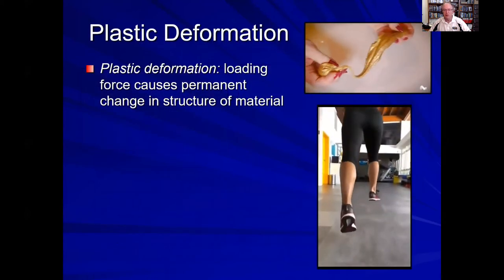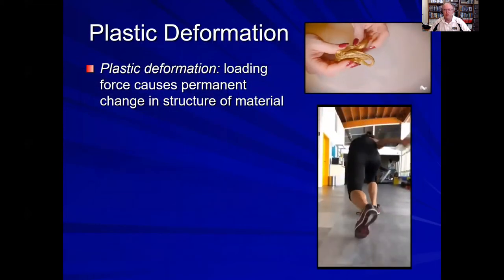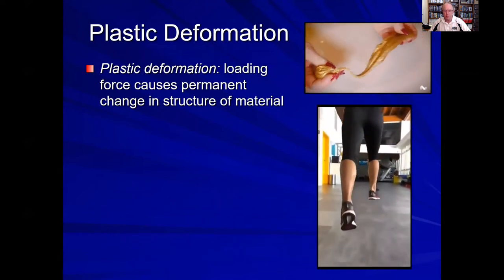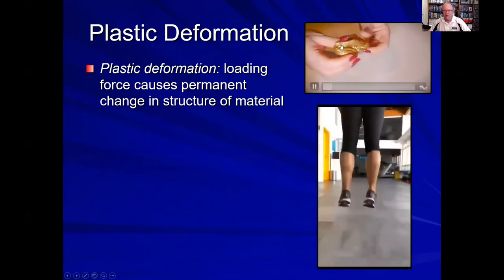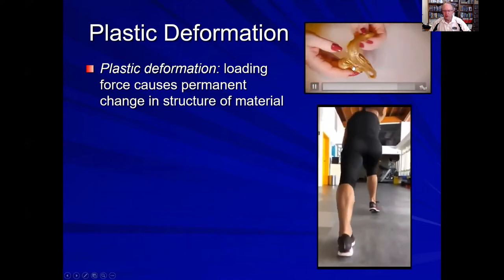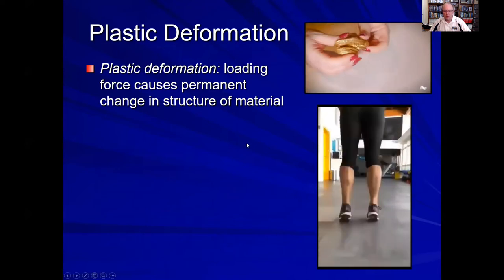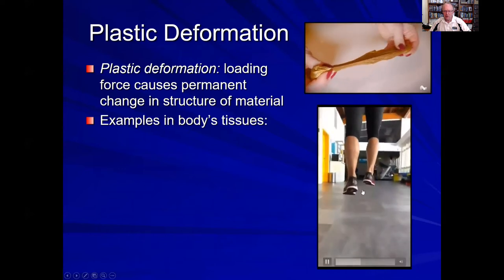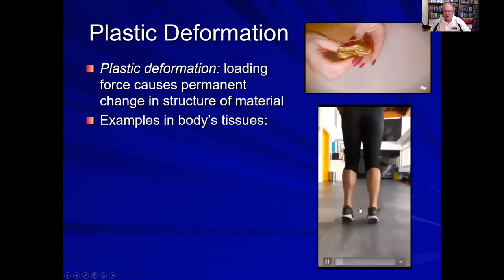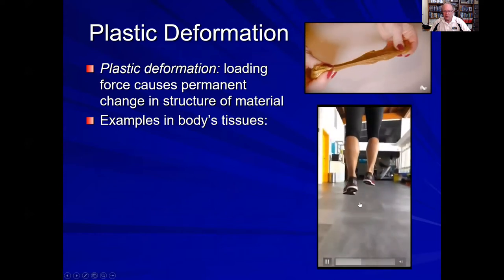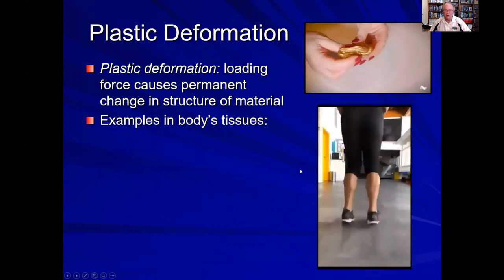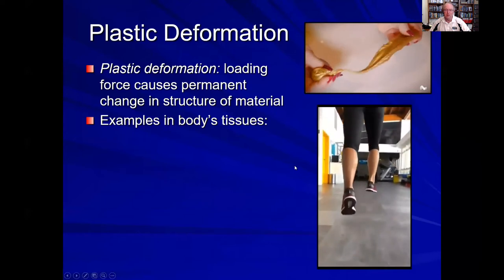Plastic deformation is quite different. It occurs when an external force is applied to an object and that object permanently deforms. Here we have putty being formed plastically, changing shape depending on the external load. And here we have an individual who hits the ground hard and suffers an Achilles tendon rupture — that is a plastic deformation of the Achilles tendon. It's not going to return to its original shape until surgery is performed or it is cast and healed.